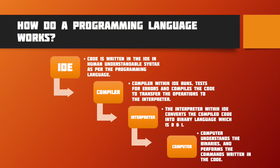Here is a chart about how a programming language works. First, the code is written in the IDE in human-understandable syntax as per the programming language. The compiler within the IDE runs, tests for errors, and compiles the code to transfer the operations to the interpreter. The interpreter within the IDE then converts the compiled code into binary language, which is zeros and ones. The computer understands the binaries and performs the commands written in the code.